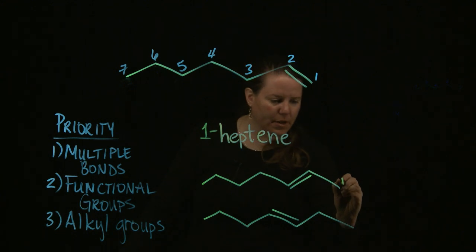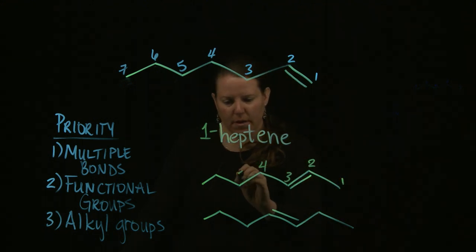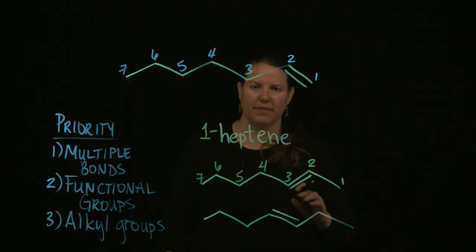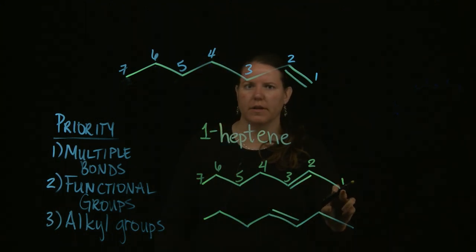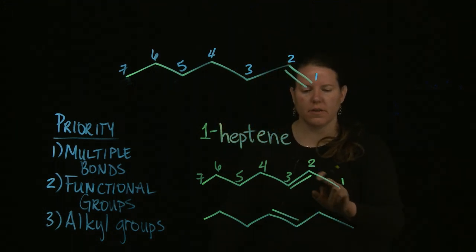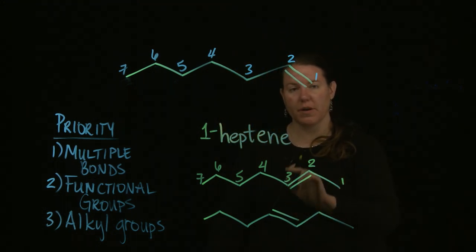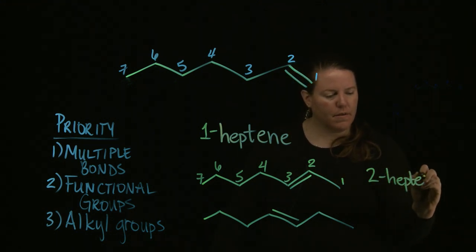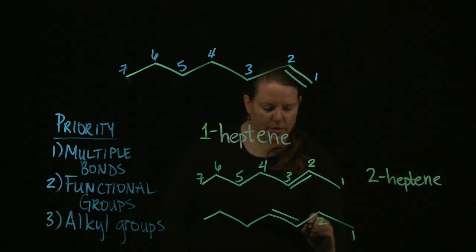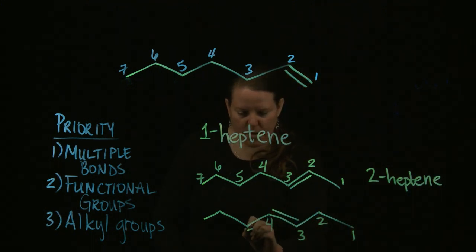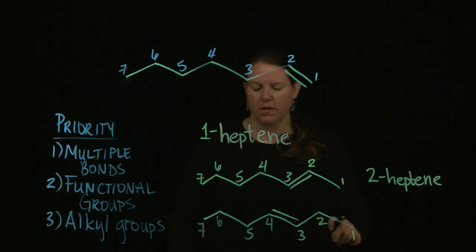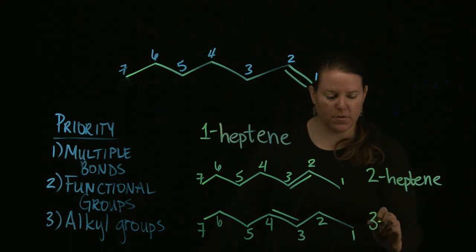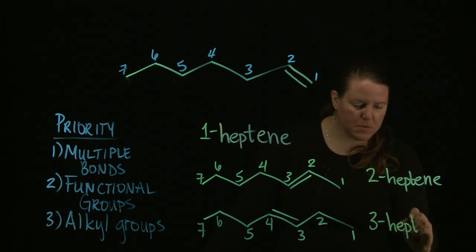This one, if we numbered it correctly, we would have numbered it from the right side. We would have started right here. And, indeed, you would have had a two and a three. The lower of those two numbers is two. So, this would be two heptene. And, this one would be one, two, three and four. The lower of those two numbers is three. Three heptene.